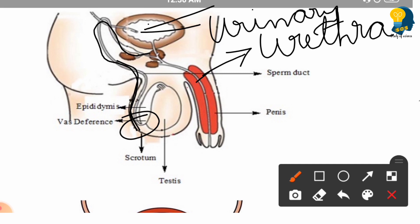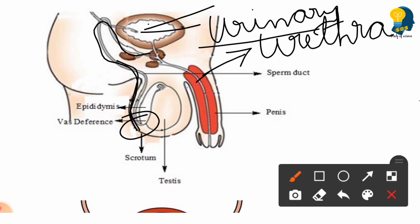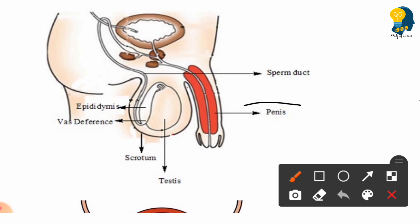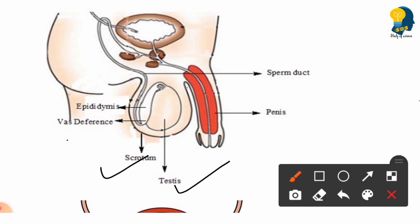The urinary bladder contains urine. The vas deferens is connected to the urinary bladder, and from the urinary bladder this tube emerges towards the penis — this tube-like structure is called the urethra. The penis is also a very important organ that helps to discharge both urine and sperms. It is an external part present outside the body.